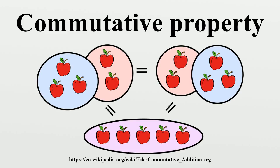Commutative operations in mathematics: Two well-known examples of commutative binary operations. The addition of real numbers is commutative since, for example, 4 plus 5 equals 5 plus 4, since both expressions equal 9. The multiplication of real numbers is commutative since, for example, 3 times 5 equals 5 times 3, since both expressions equal 15.